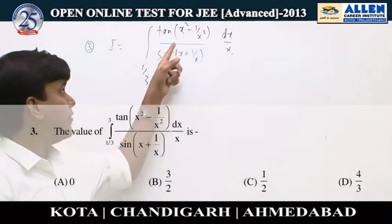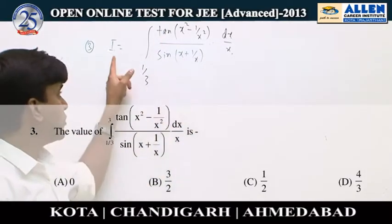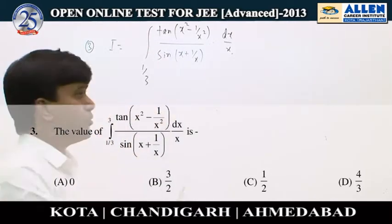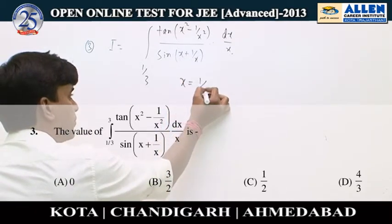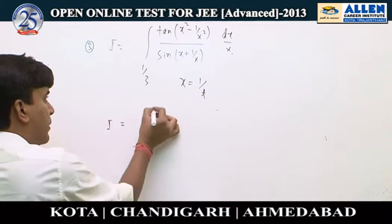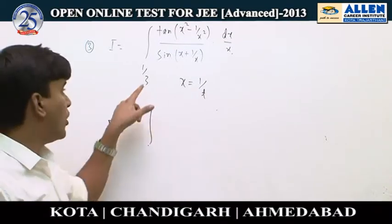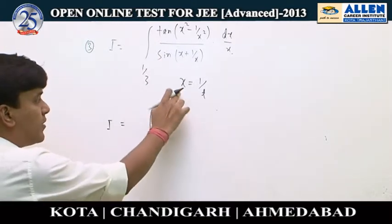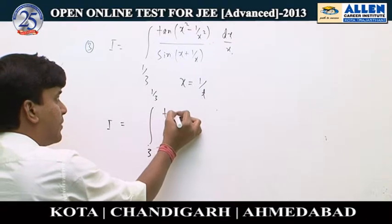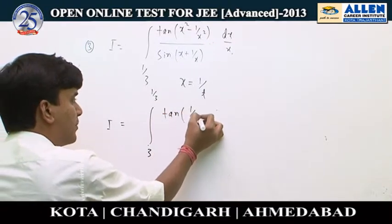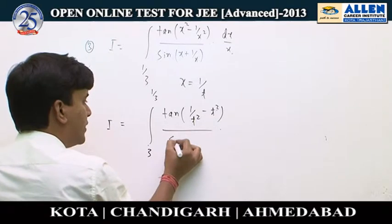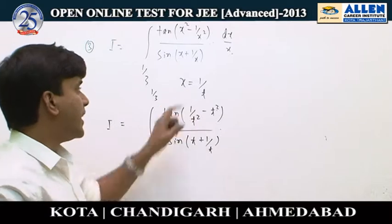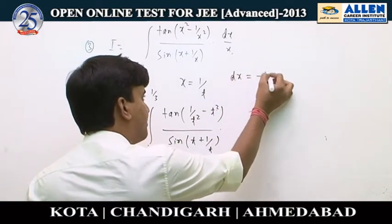In question number 3, we have to find the value of this integral; let's call it I. This is a reciprocal limit integral, so we use the substitution x = 1/t. Putting x = 1/t, the lower limit 1/3 becomes 3 and the upper limit 3 becomes 1/3. The integrand becomes tan(1/t² − t²) / sin(t + 1/t), and dx = −1/t² dt.